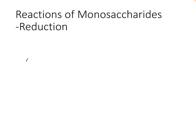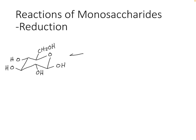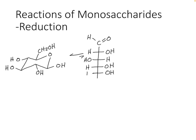Let's draw a monosaccharide. Most of the time, equilibrium favors the cyclic structure for these monosaccharides, but a small amount will still exist in its open chain form. So let's draw the open chain form for this monosaccharide. This is D-glucose, our favorite sugar.